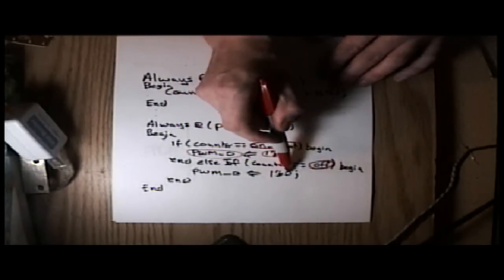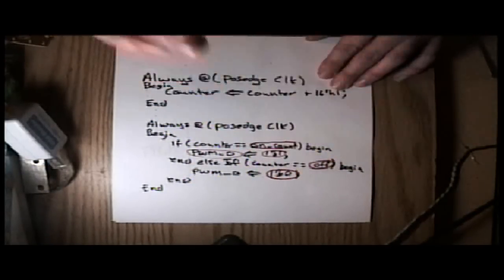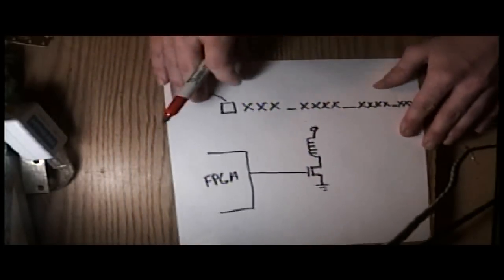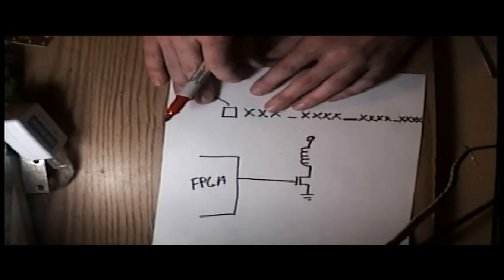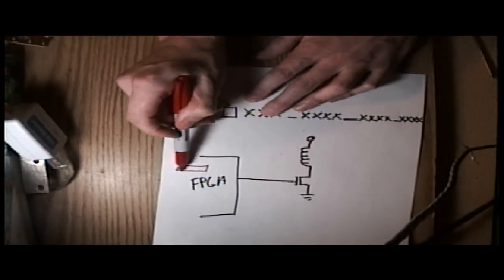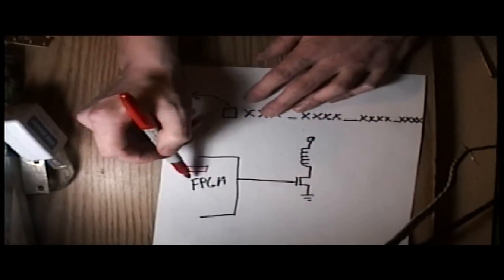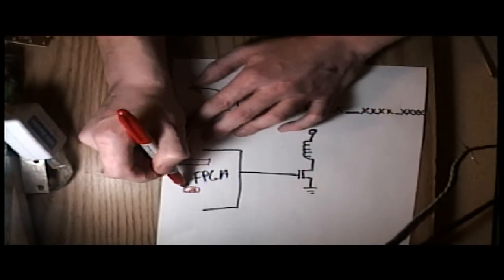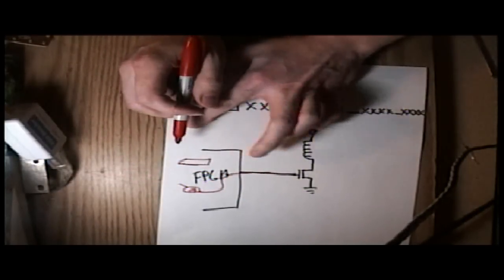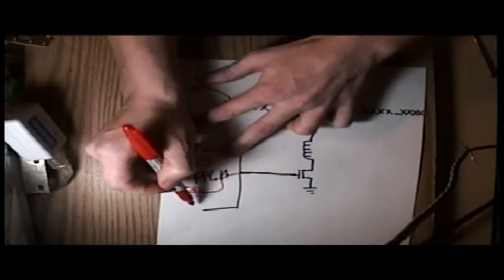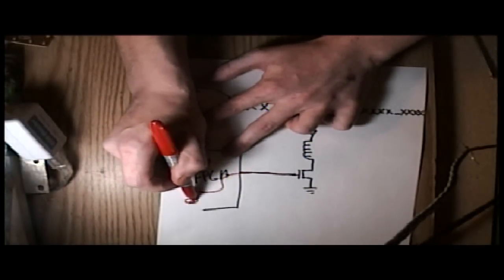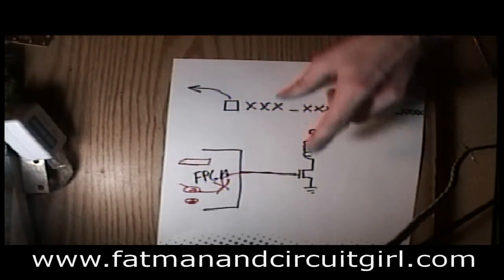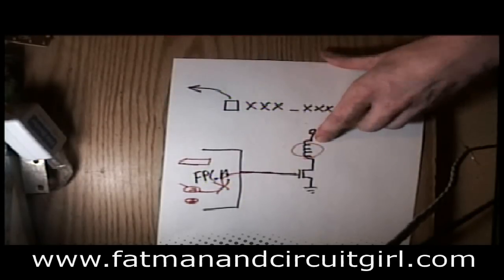We're doing a comparison - if the counter equals an off time at a certain off count, then we turn the solenoid off again. So you can see what the circuit looks like. This is the FPGA and we have the counter inside here running forever. Then we have a comparator circuit, so if it's equal to a particular number then we drive current out onto this pin. If it's equal a little bit later on to a different number, then we remove this current going out to the FET. We turn off the solenoid and that's how we control the strength.